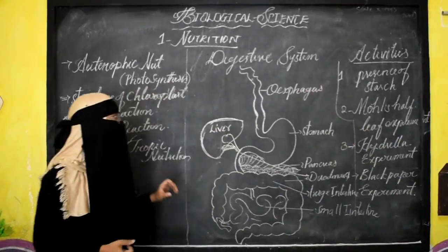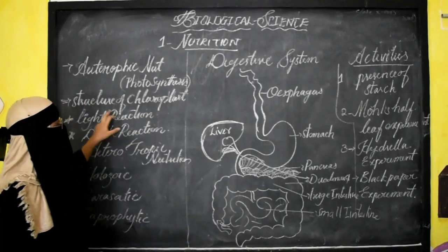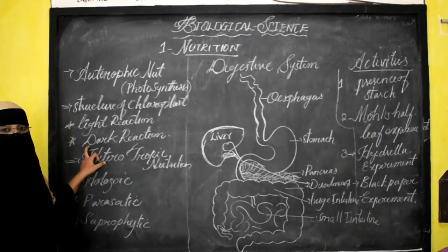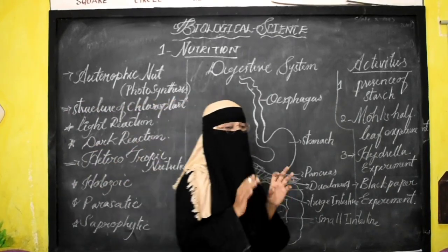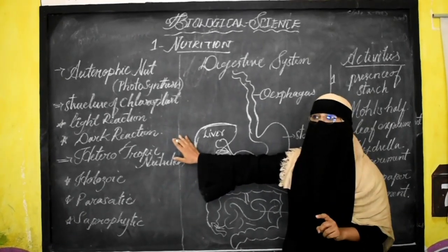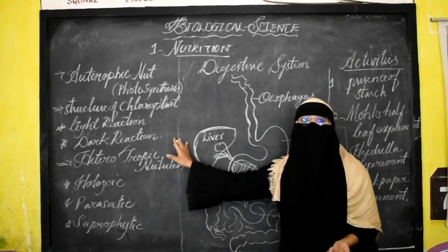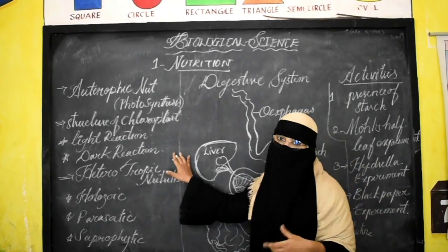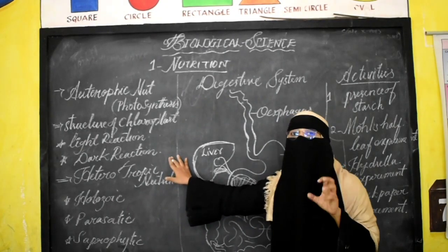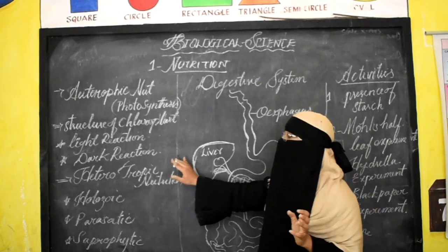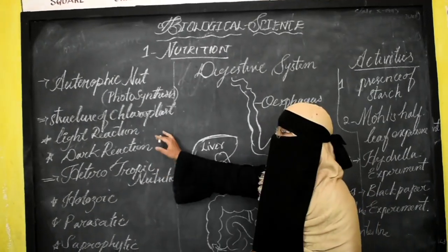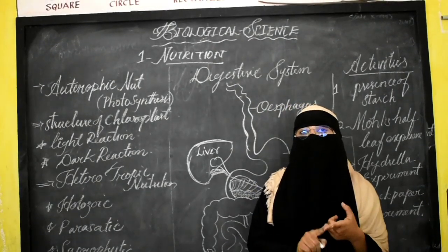The main things you need to learn in this chapter are the structure of the chloroplast, and you must know what is the light reaction and what is the dark reaction. From light reaction and dark reaction, important questions usually asked are: what is photolysis, what is the breakdown of the water molecule (H2O giving rise to H+ and OH- ions), and what is the light harvesting pigment — that is chlorophyll.